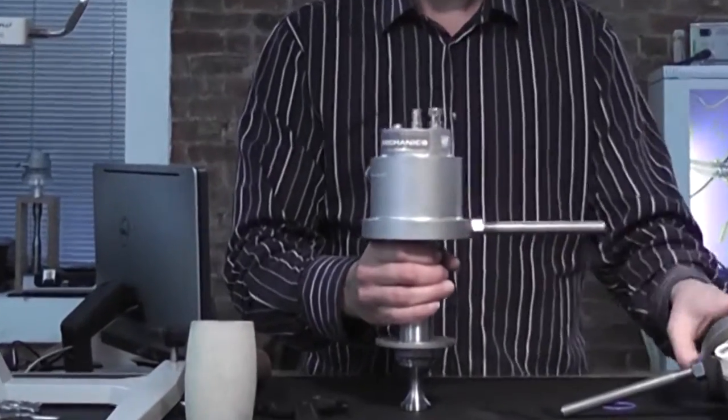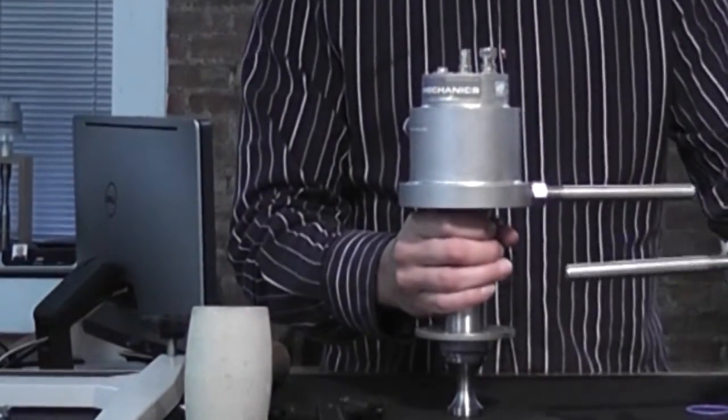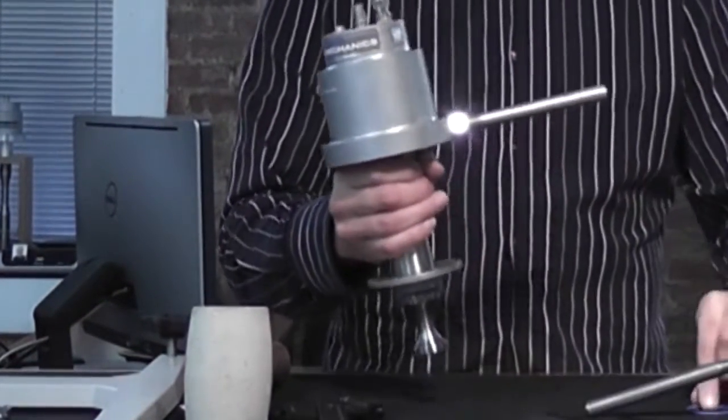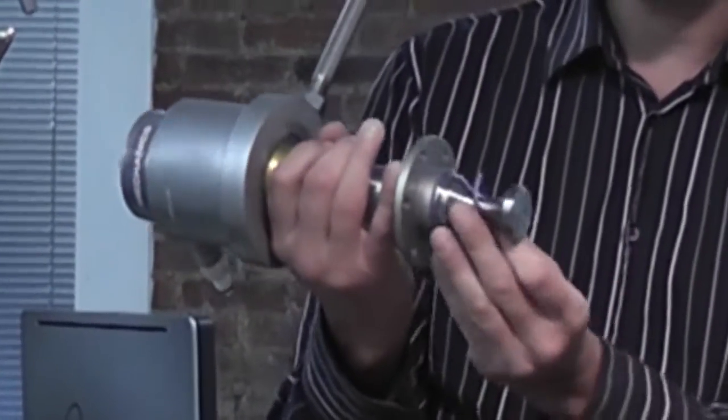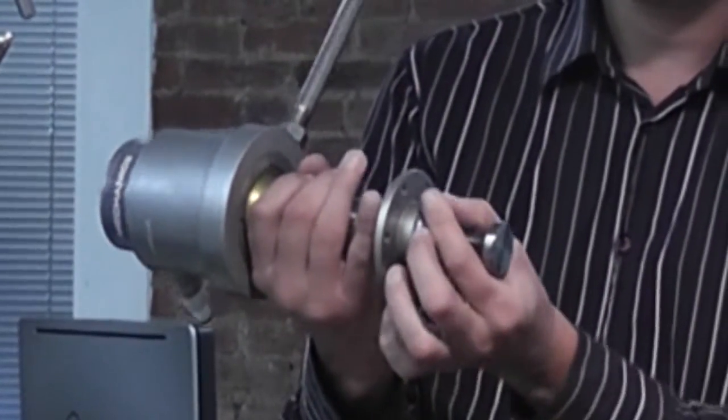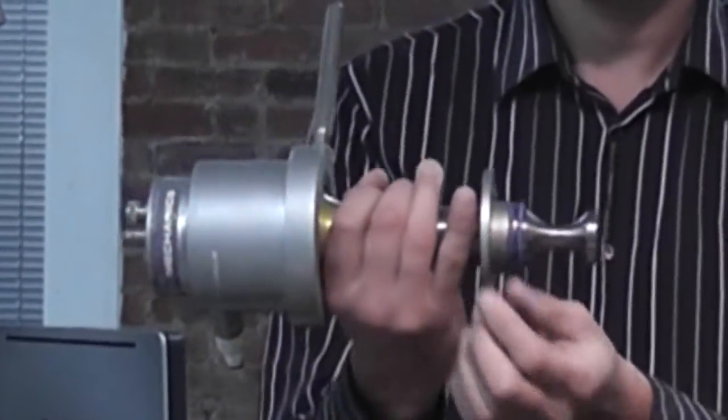Next, place the second O-ring below the flange of the horn.